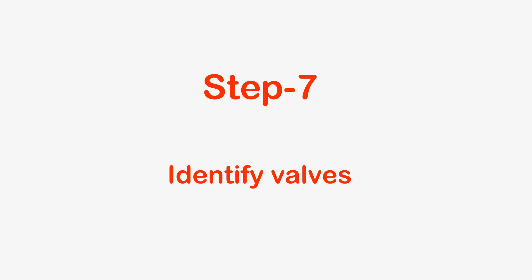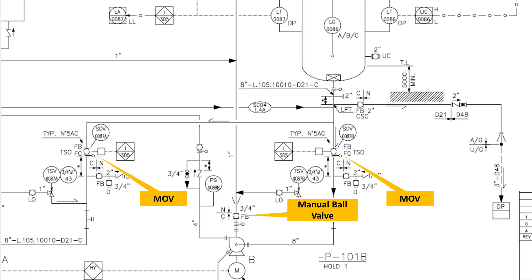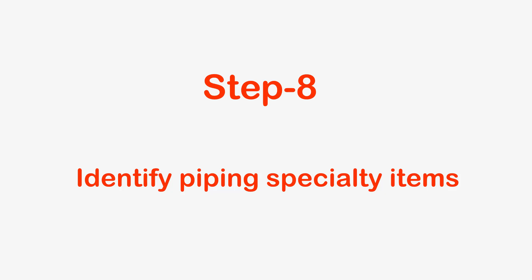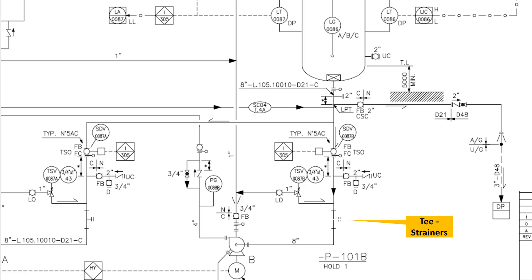Step 7: Identify Valves. Here we identify all types of valves in the P&ID. It could be a manual valve, a control valve, or small valves in the drains and vents. Identify all types of valves and their sizes. Step 8: Identify Piping Specialty Items in the Line. There may be many piping specialty items in the line, for example filters, strainers, and rupture discs.